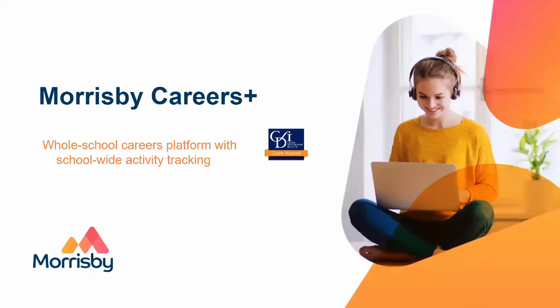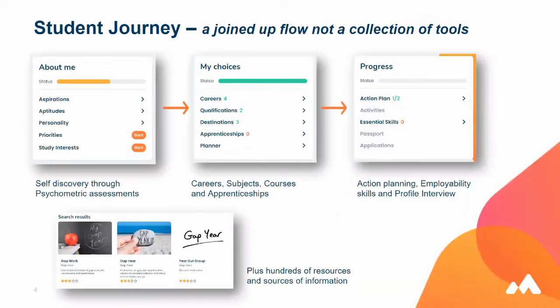Morrisby careers is a whole school solution. When a student first logs in, they have three key sections: the About Me section with all the questionnaires, My Choices with the things they're thinking about doing and have chosen, and the planner within the My Choices section — which is a really good way for a careers advisor to look at everything a student has done. You can see what subjects they're thinking about at 13 to 14, post-16, where they're thinking about going, what careers they're considering, and any apprenticeships they've liked.